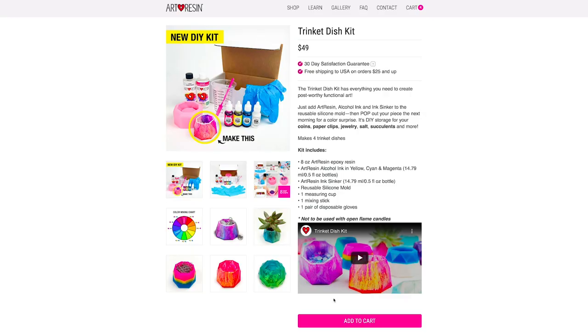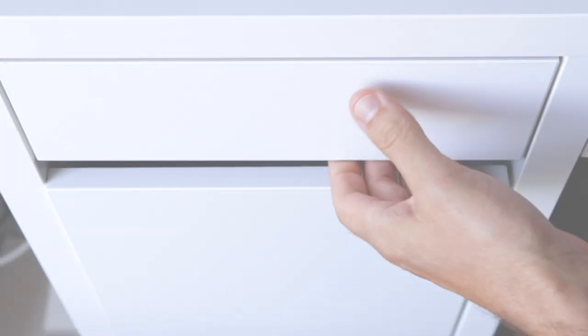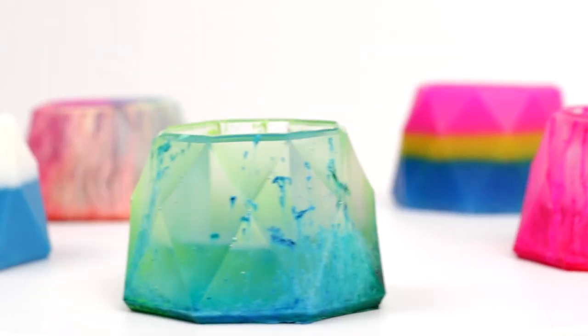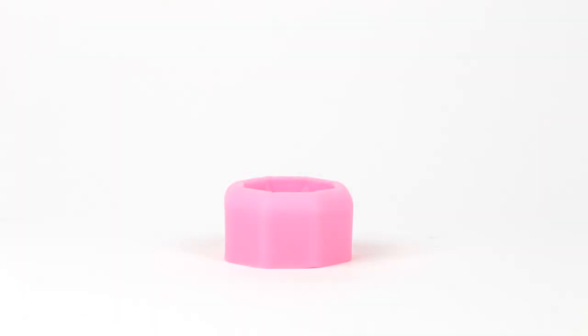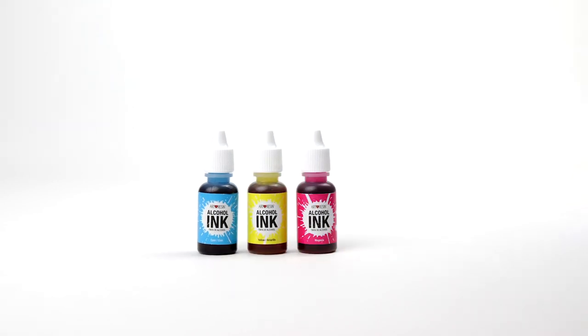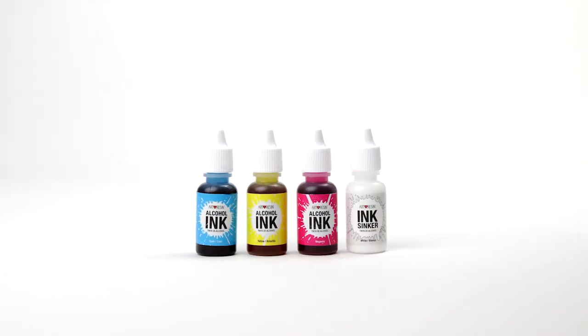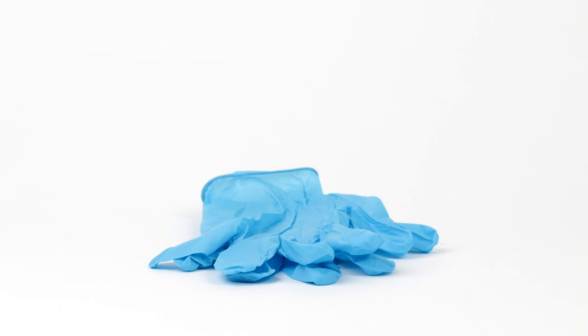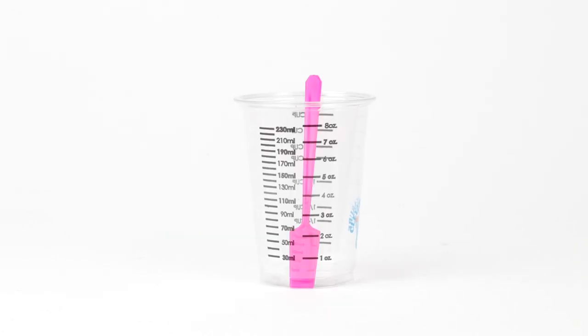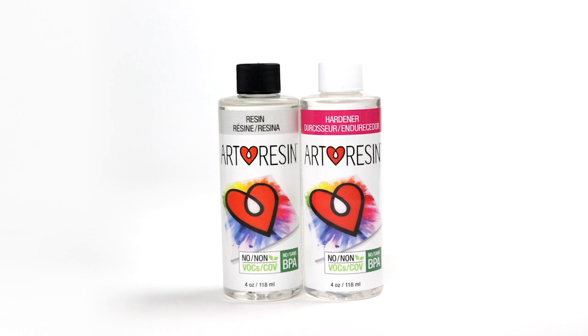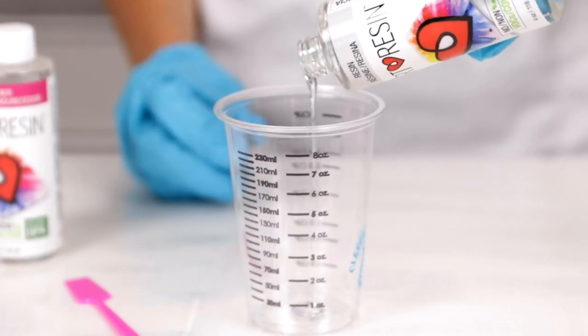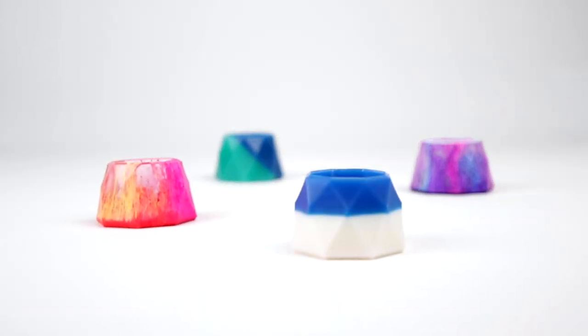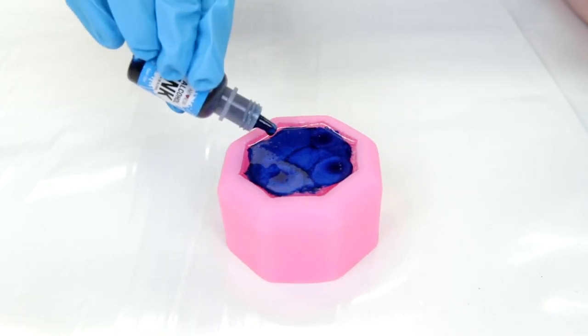Each kit includes a reusable, durable silicone mold, Art Resin alcohol ink in cyan, yellow, and magenta, Art Resin ink sinker, disposable gloves, a handy measuring cup, a mixing stick, and of course eight ounces of Art Resin epoxy resin, which is enough to make four trinket dishes.